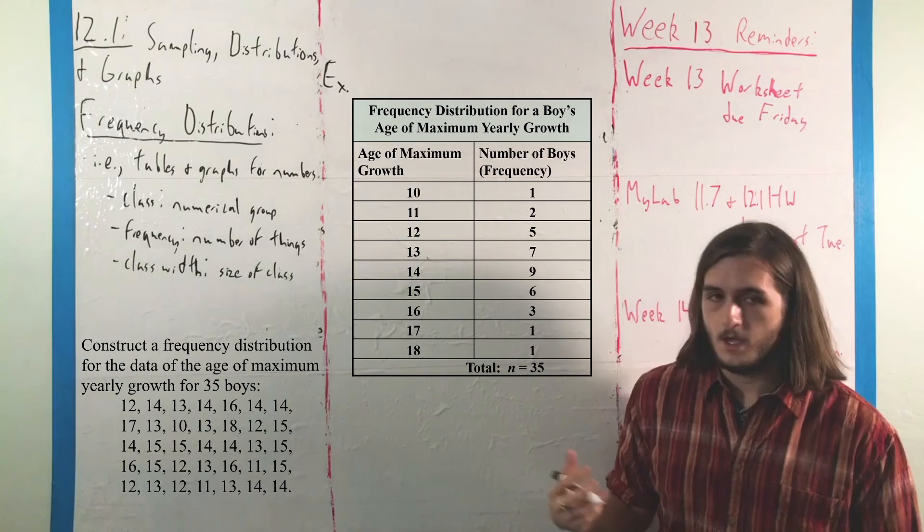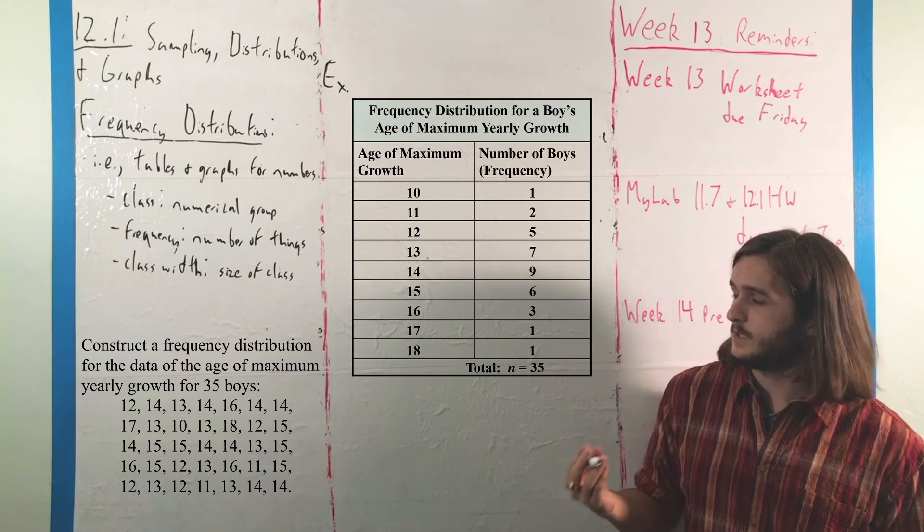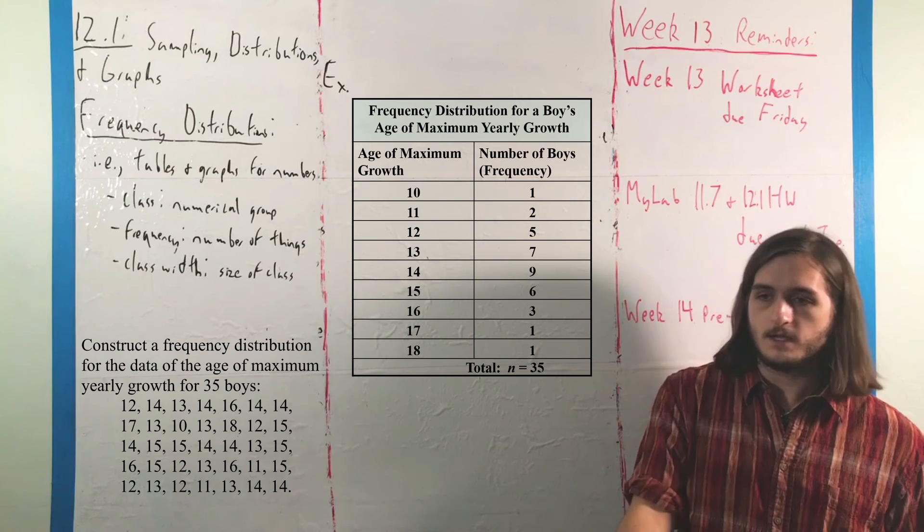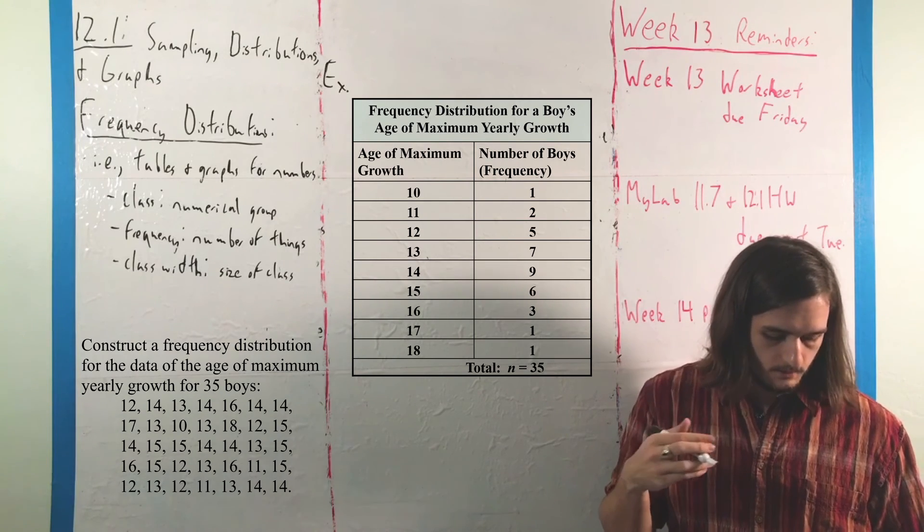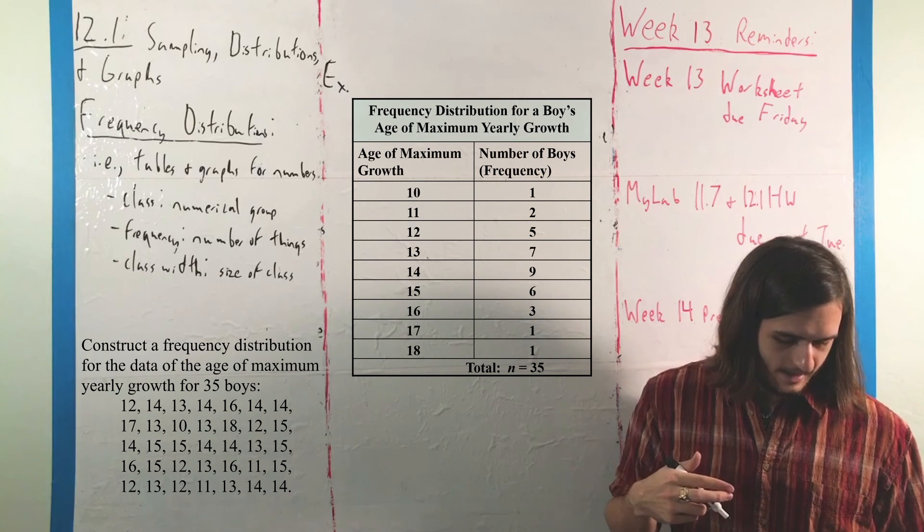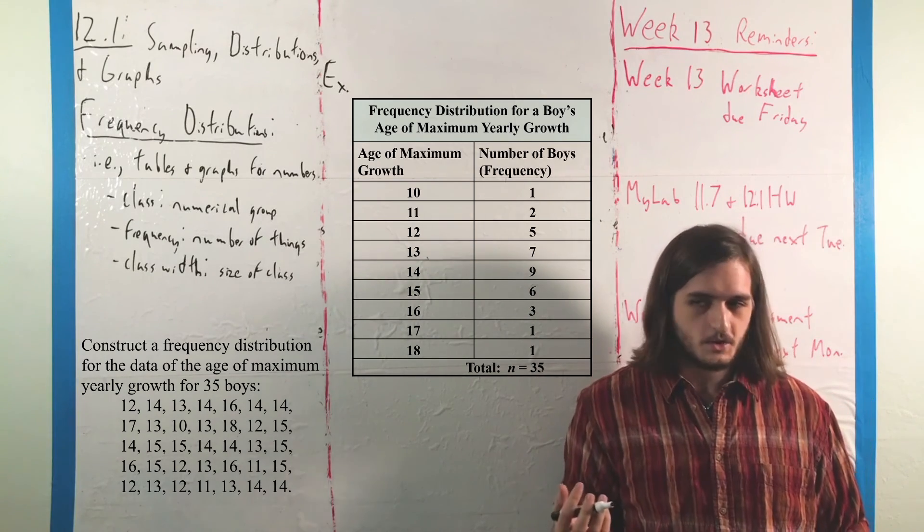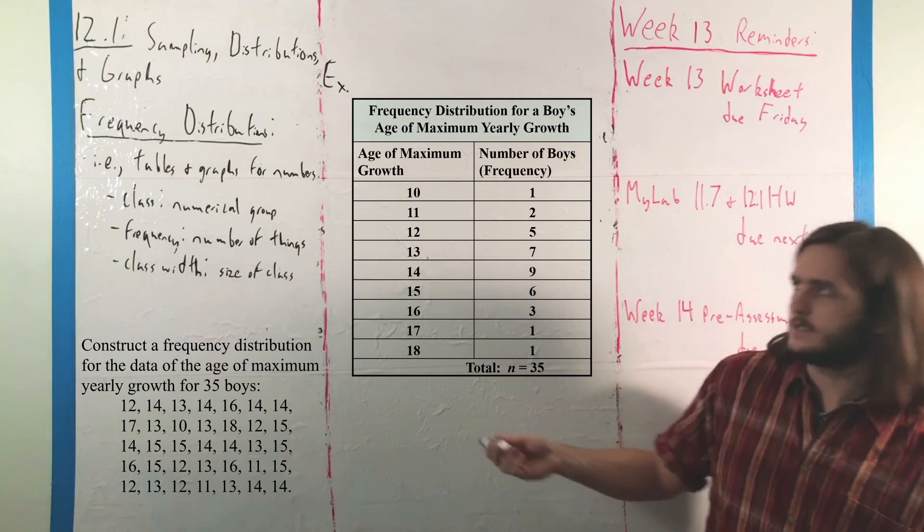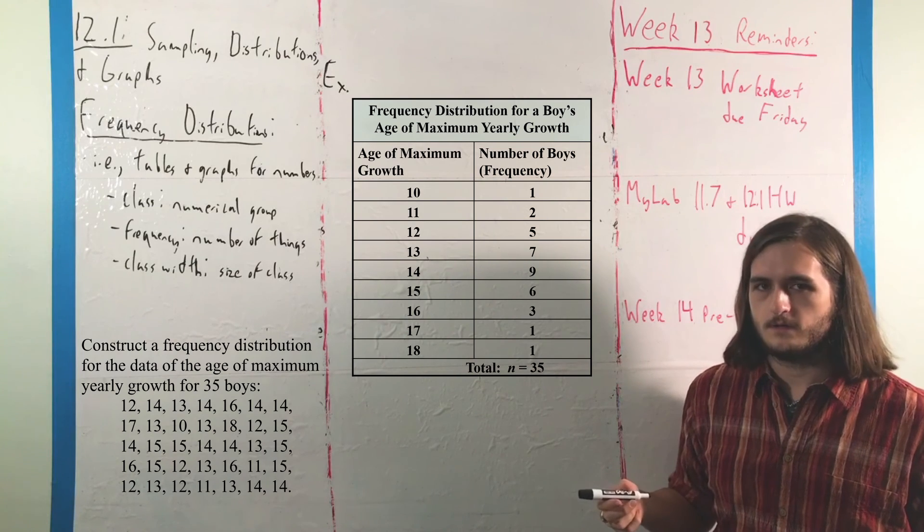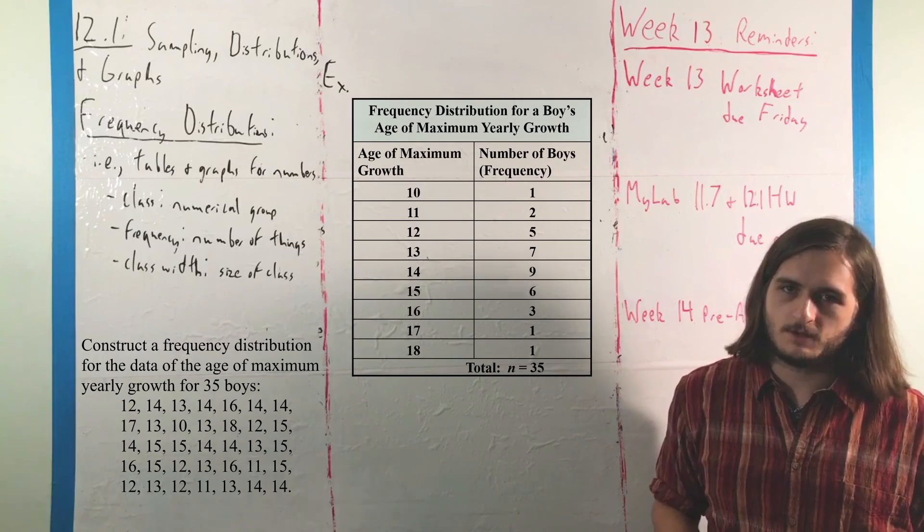From there, you have a much better sense of the situation. You can actually maybe make some interpretations where you can see that the frequencies increase up to a peak at 14, where that's the most common one, the most common age that you get a maximum yearly growth. That's really specific, but that's a pattern that you can recognize a lot easier for the fact that this is presented in a much nicer table than what you had with that big pile. People generally don't like dealing with big piles of numbers. Table is a much cleaner picture.